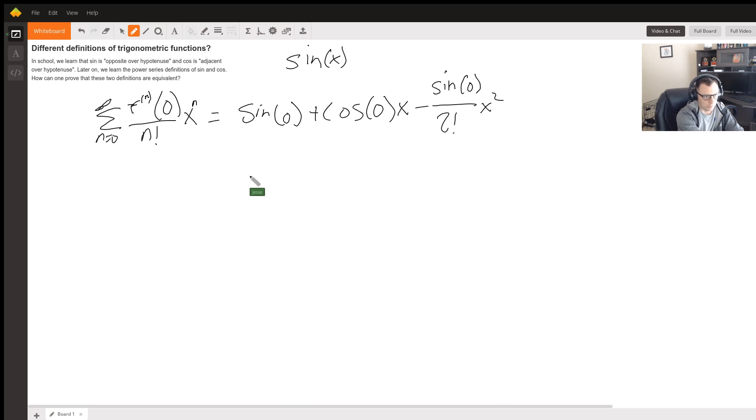And we can do a couple more terms, but you kind of get the idea. This is going to be minus again, because it's minus cosine zero over three factorial x to the three.